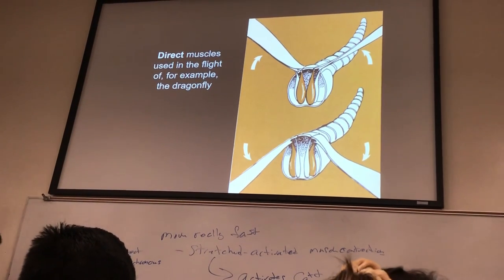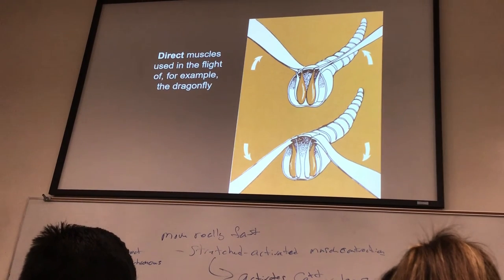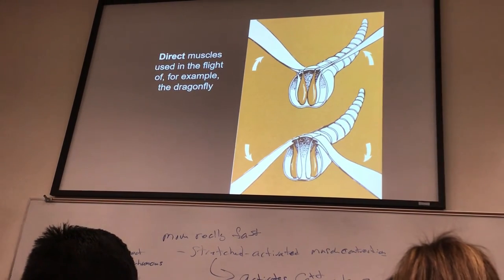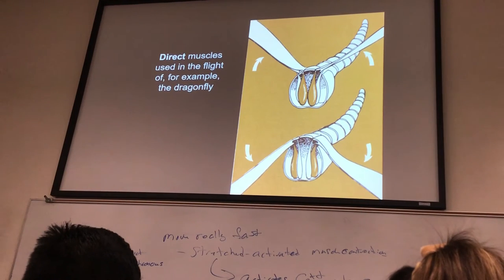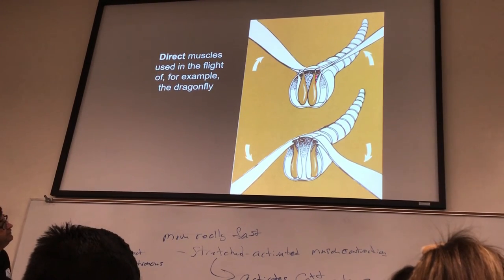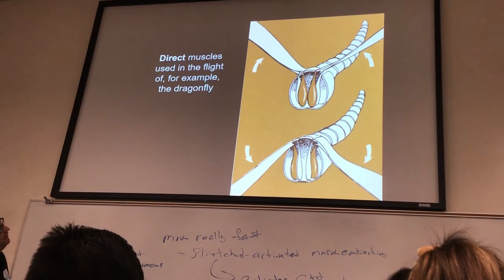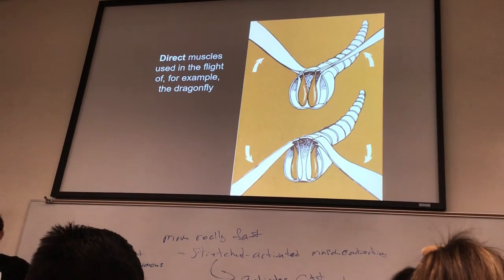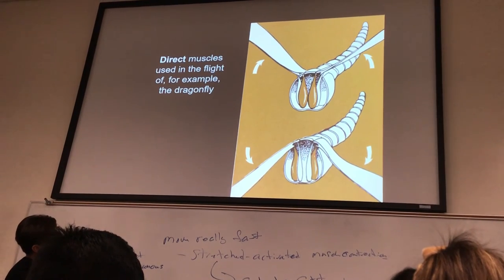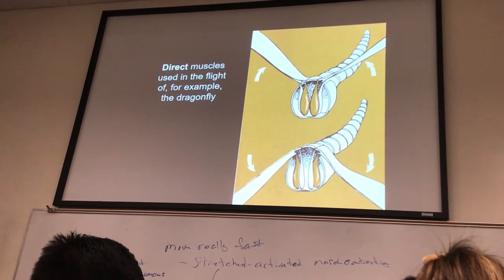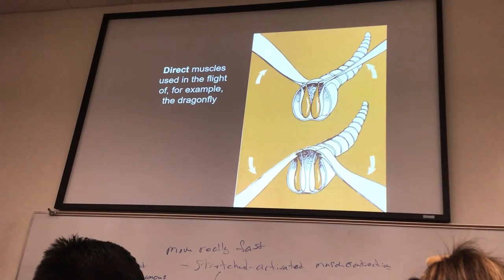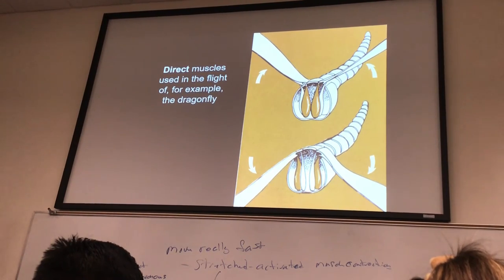Direct muscles have a one-to-one relationship: an action potential leads to a muscle contraction. Like a dragonfly, these insects do not have extremely high wingbeat frequencies, so they use direct muscles with elevators and depressor muscles. The elevators bring the wing up, and the depressors pull the wing down — similar to our biceps and triceps. We don't stimulate the tricep by stretching it; we have to send an action potential.